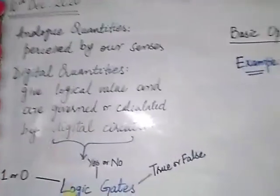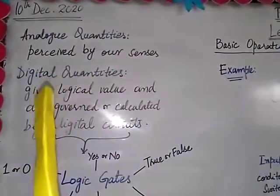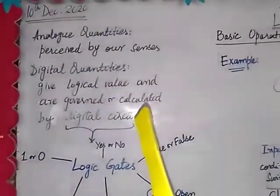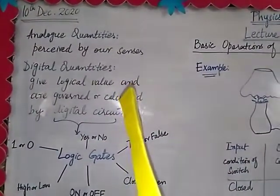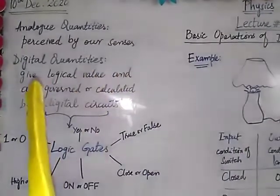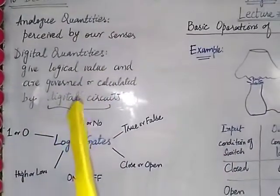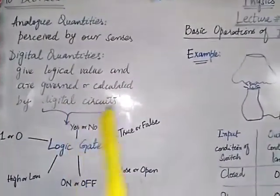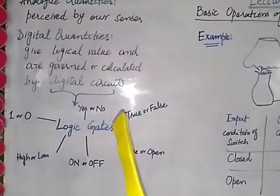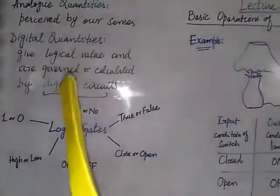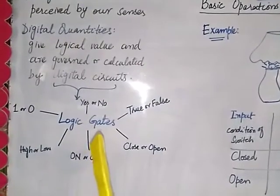we revise the terms analog quantities and digital quantities. Analog quantities are the quantities which are perceived by our senses, which we can govern or take an estimation of by our senses. On the other hand, digital quantities are the quantities which give logical values and are governed or calculated by digital circuits. These digital circuits which give the logical value of the digital quantities are known as logic gates.